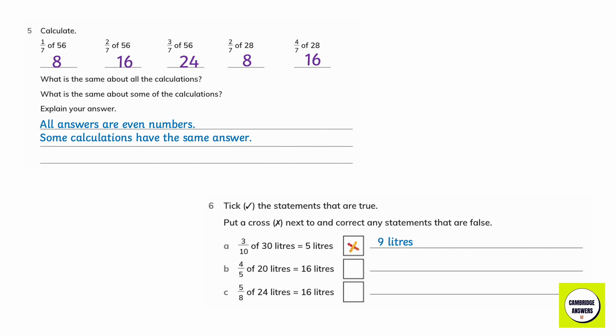4 fifths of 20 litres is 16 litres. This is correct. 5 eighths of 24 litres is 16 litres. This is wrong. The answer is 15 litres.